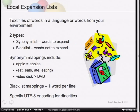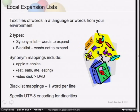There are two different types of lists you can upload. One is a synonym list - words to expand. You can also have a blacklist, which is words you do not want to expand. For example, if 'chrome' were being expanded to 'shiny' or 'metal', but it's really your internal product and you don't want it expanded, you can enter it as one word per line to say: do not expand these terms.